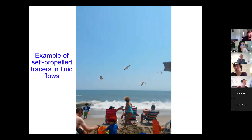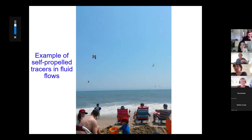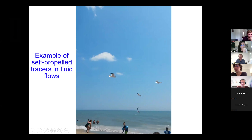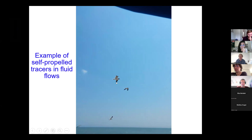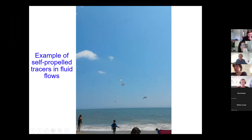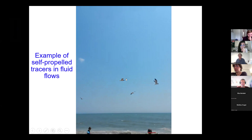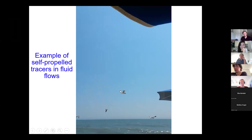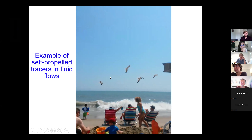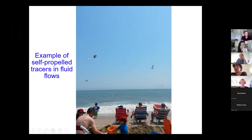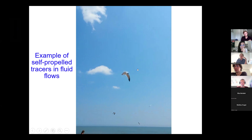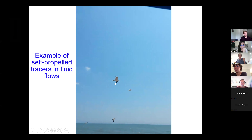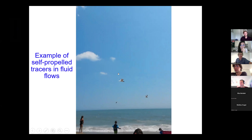Here's a particular movie I took at the beach — a really good example of an active tracer moving in a fluid flow. This is basically a bird at the beach experiencing significant French fry taxes. The bird is clearly flying to the right, but it's not really going anywhere because there's a very strong wind going to the left. I find this a very visual example of the interaction between a self-propelled object and some sort of external flow.